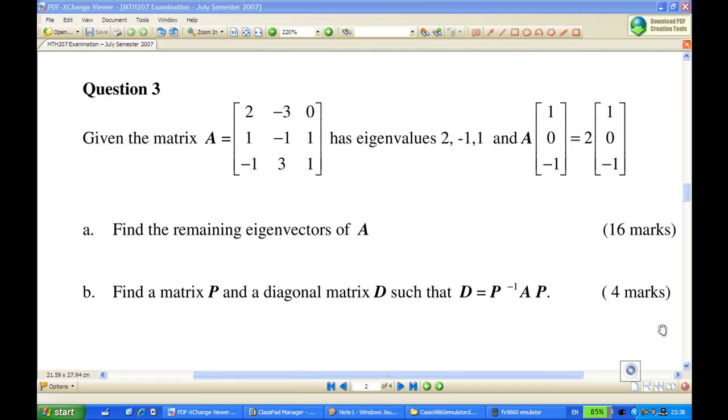We are given a matrix with eigenvalues 2, minus 1, and 1. We find the remaining eigenvectors beside the vector 1, 0, minus 1. And then from here, we're going to find a matrix P such that P inverse times A times P is a diagonal matrix.